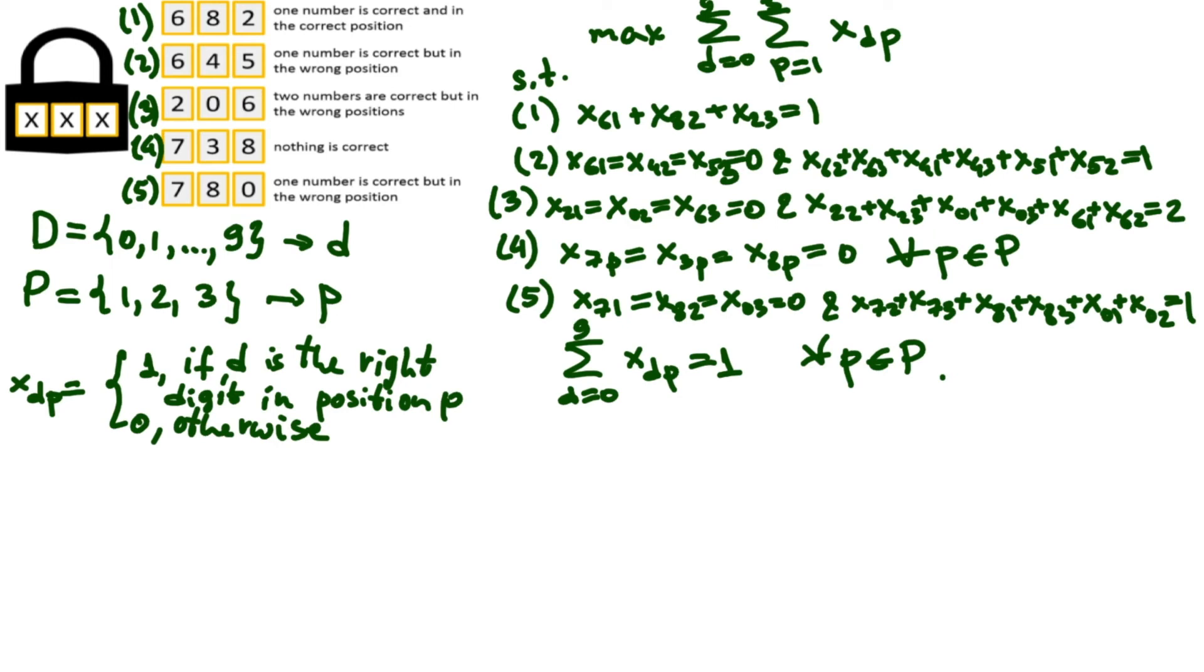Should we feed it to a solver? We could, but let's analyze the model and see if we can get the answer by fixing the variable values based on the constraints. For example, from the second condition we know that x six one is zero and from the fourth condition x eight two is zero, so the first constraint now implies that x two three equals one. So, we got one digit right. We must have two in the third position.